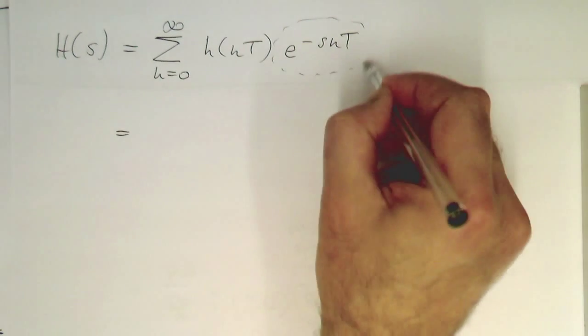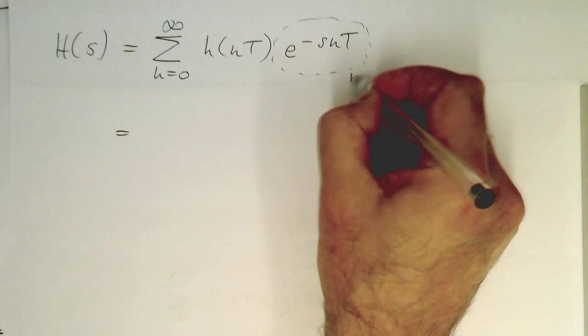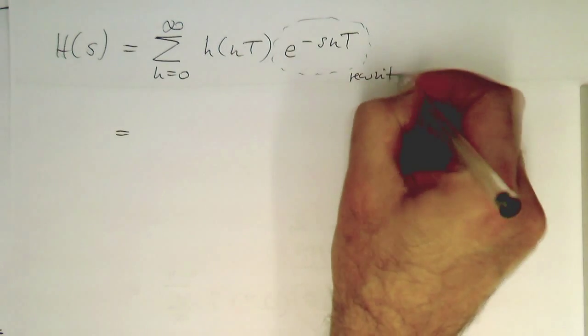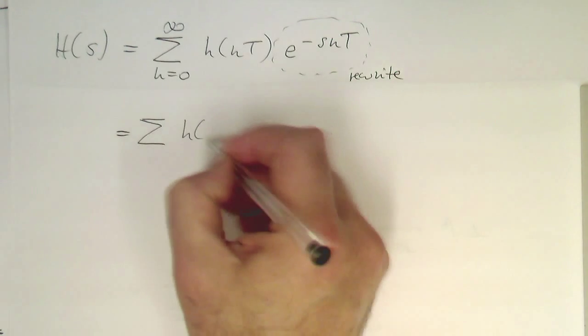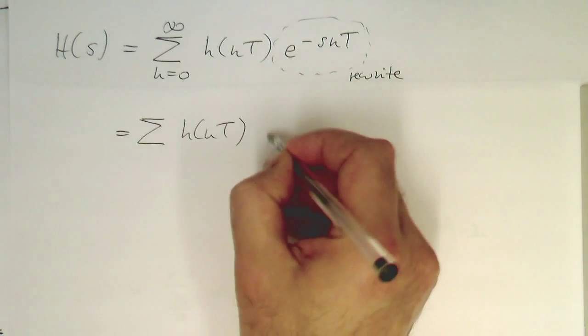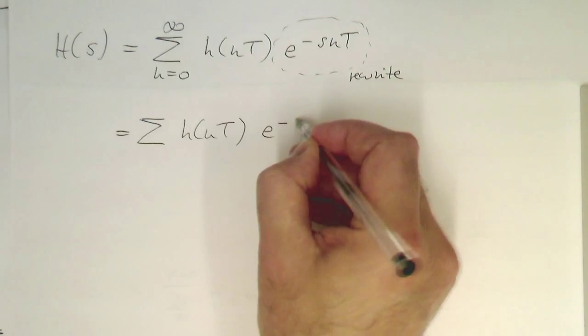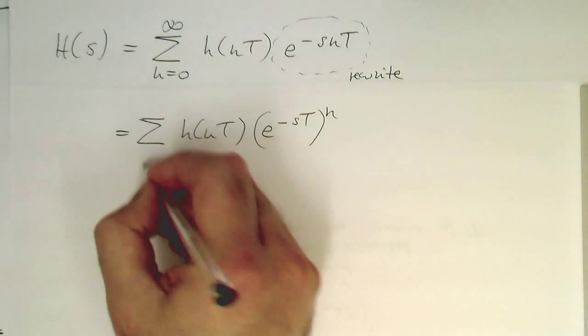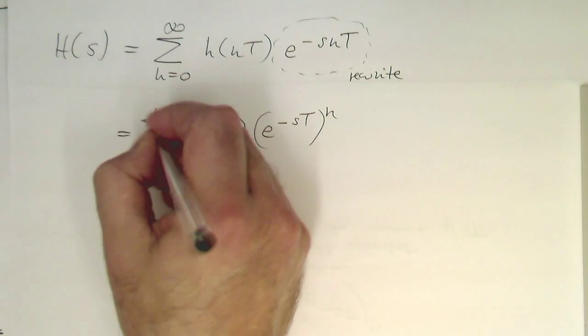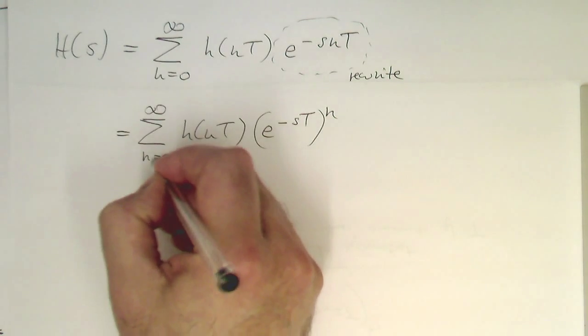Now we can rewrite this. This term here is quite interesting. We can rewrite this in this form here, e^(-sT), and then to the power of n.